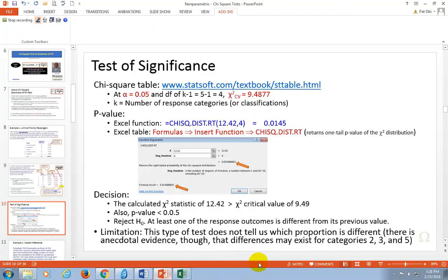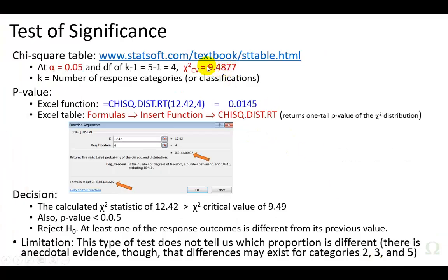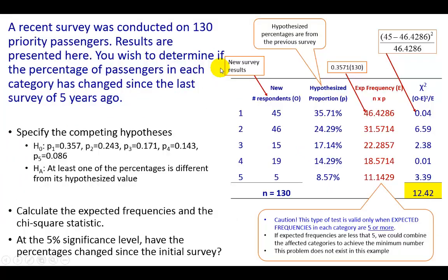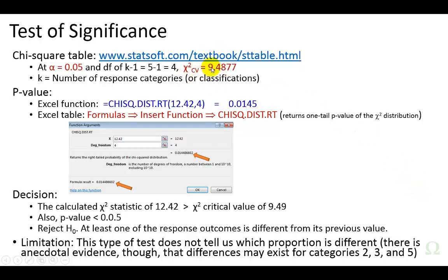Going back, the calculated chi-square statistic of 12.42 is greater than the critical value of 9.45, so we're going to reject the null hypothesis. Alternatively, you can also base your conclusion on the difference between the alpha level of 5% and the p-value.